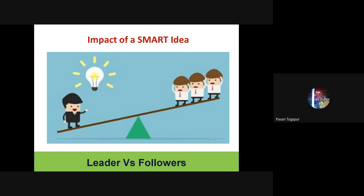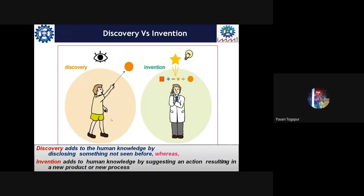What is the impact of a smart idea? Why are there only a few countries called superpowers or developed countries? There are more than 200 countries on this globe, but hardly five to six are called developed countries — more than 175 are called either developing or underdeveloped. It is because of the ideas generated by people working in countries like the US, Japan, and Korea — they are very smart and impactful, and they are capturing the whole global market. When you come up with an idea, it may lead to a discovery or invention.